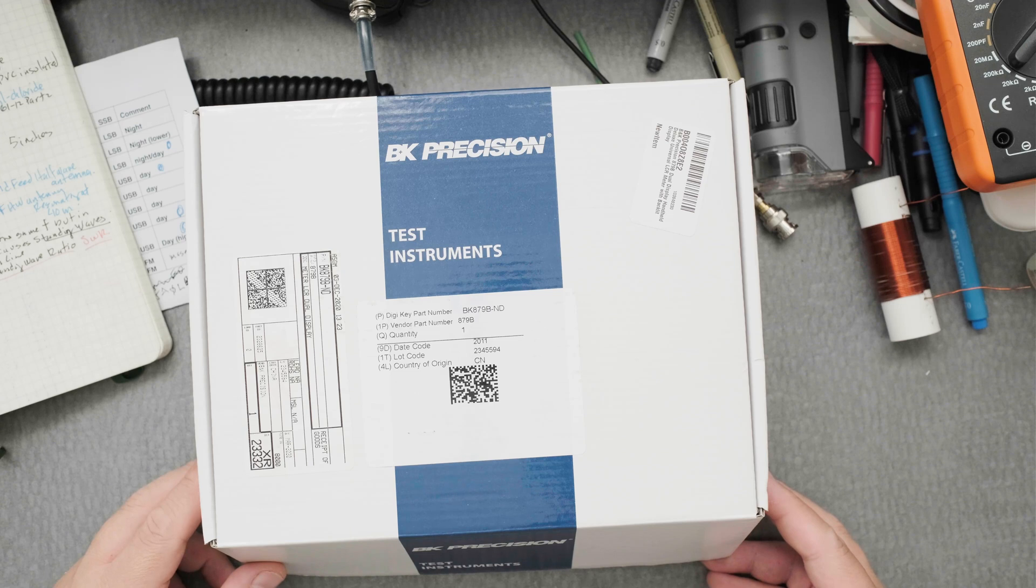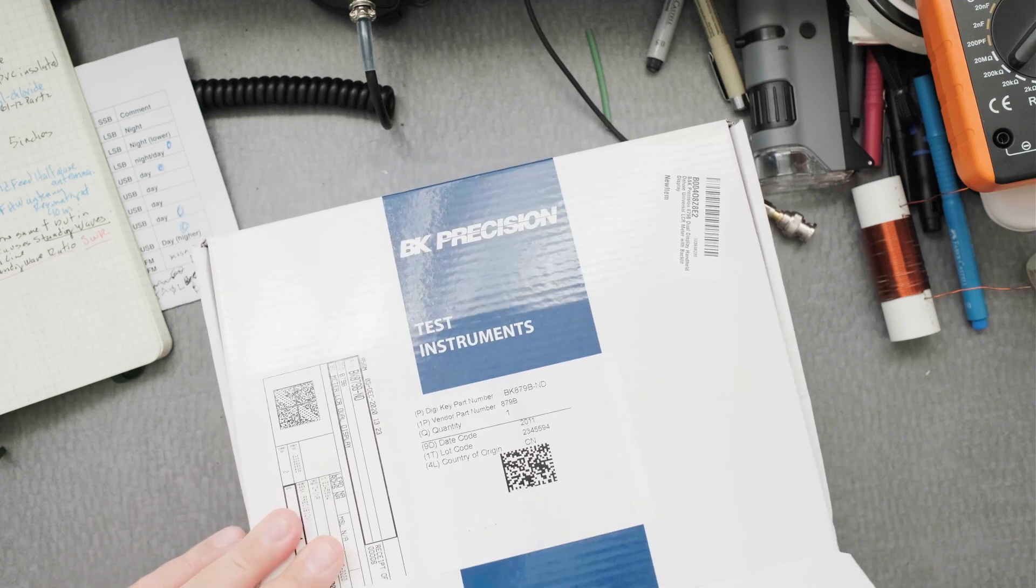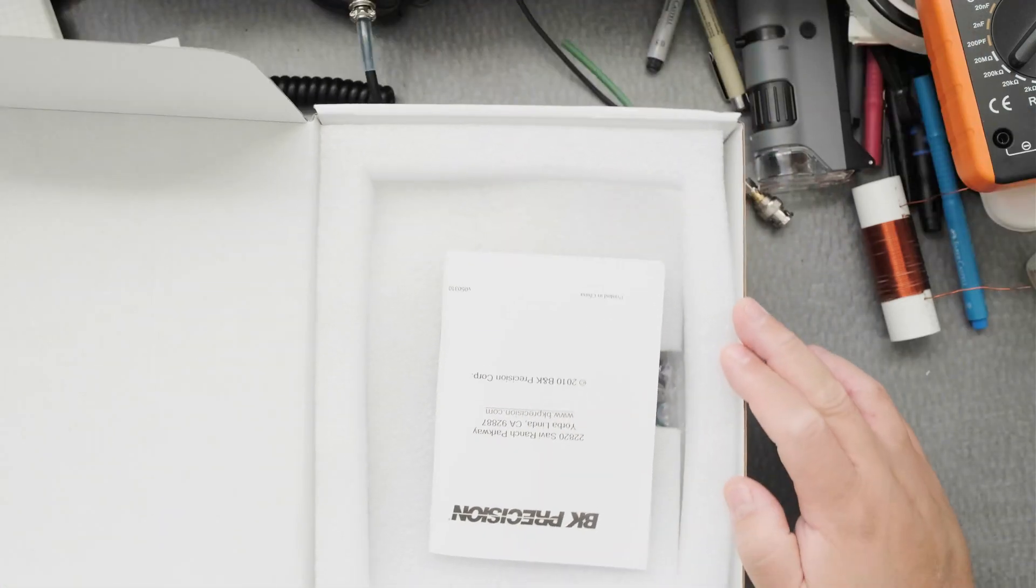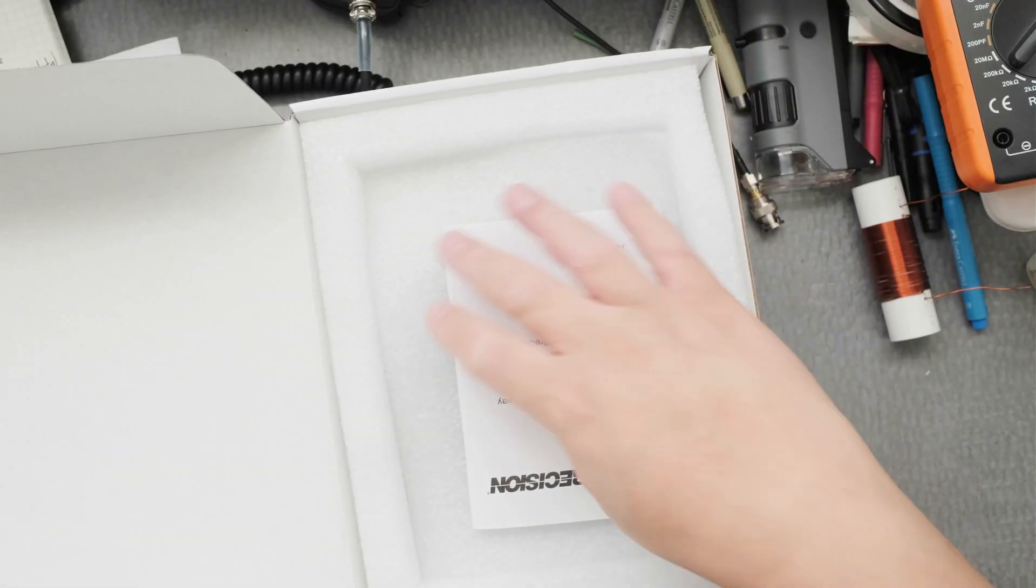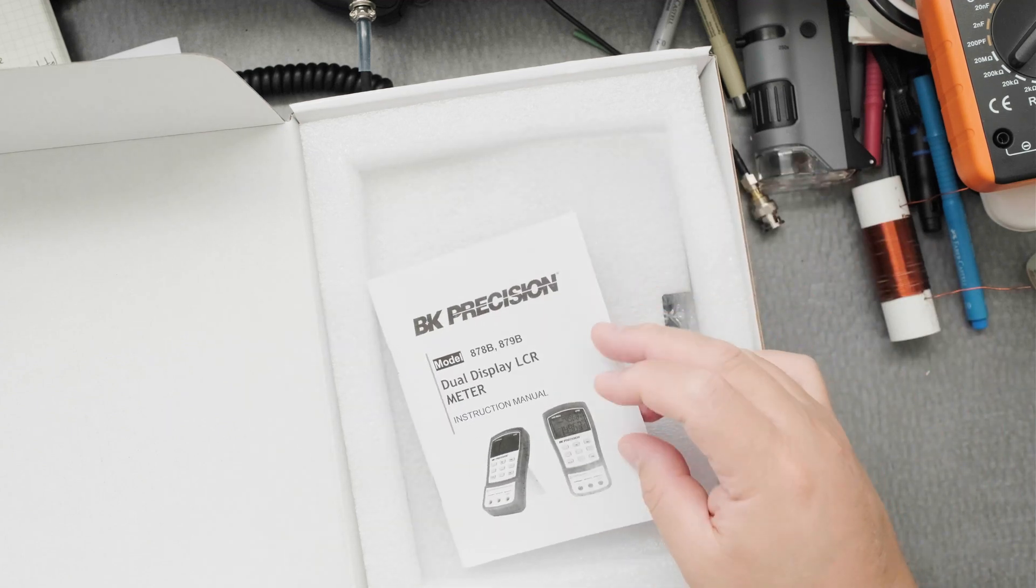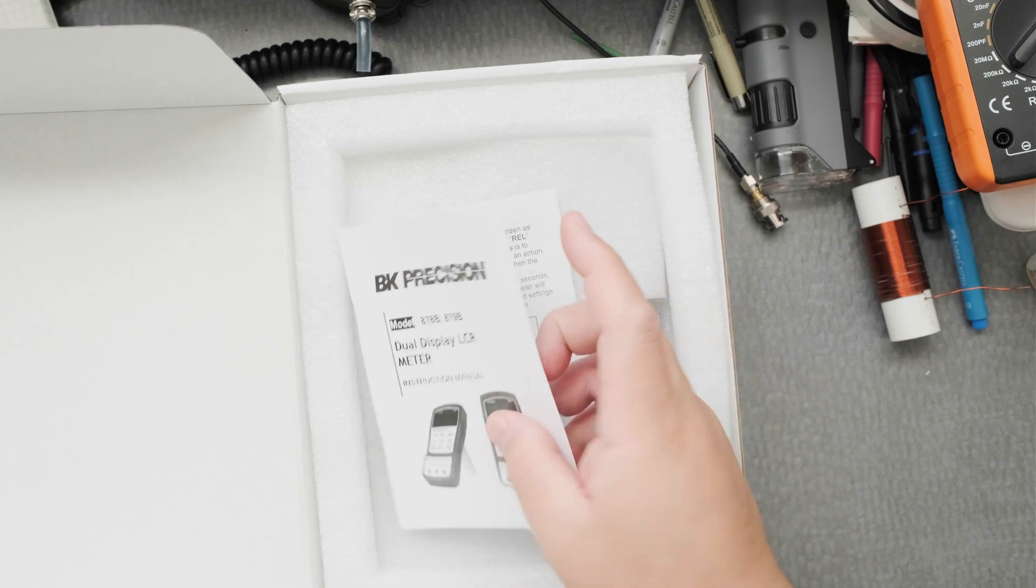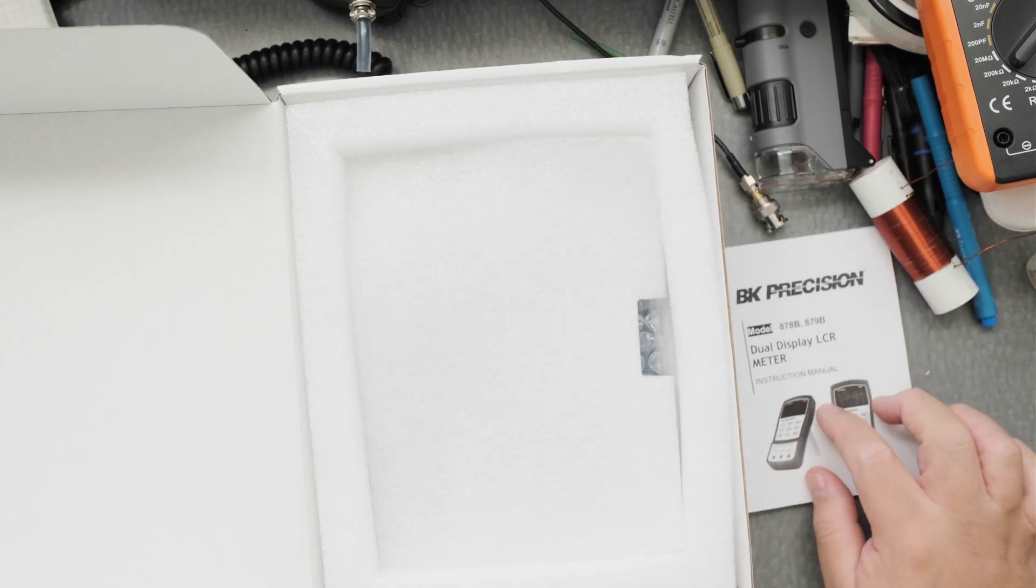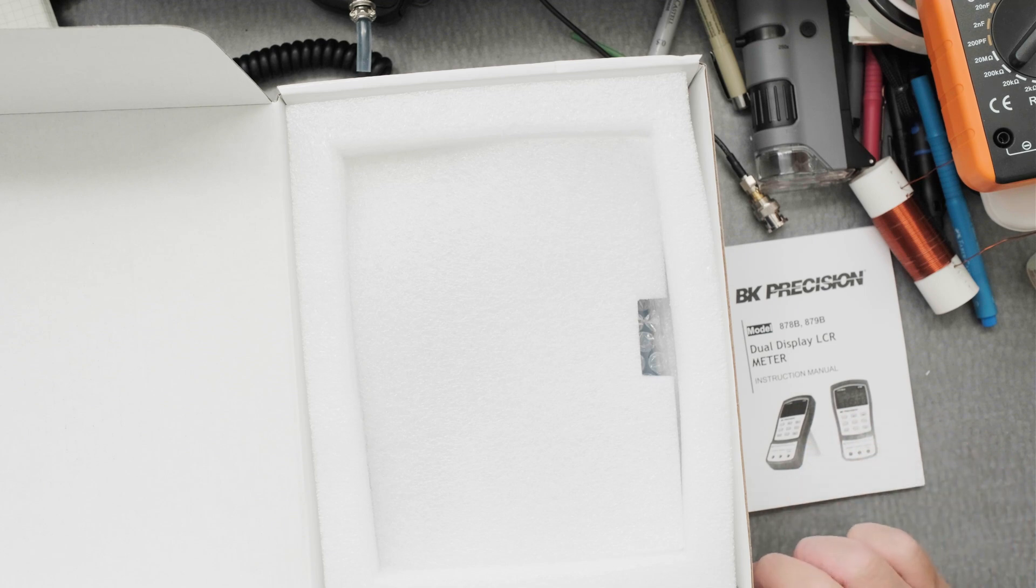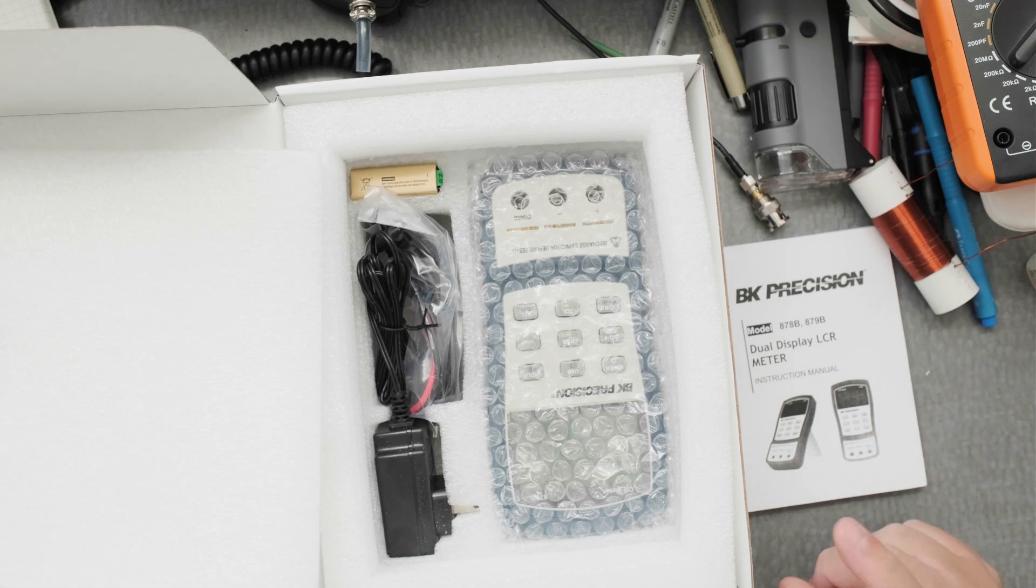The box is really nice, really well constructed. You receive a manual, which is very important to read. There's a few things in there that are going to be interesting to understand about using the unit, which the Proster didn't have.